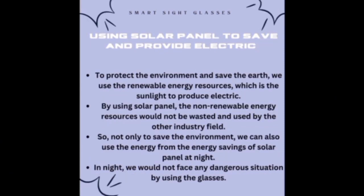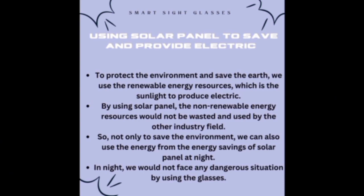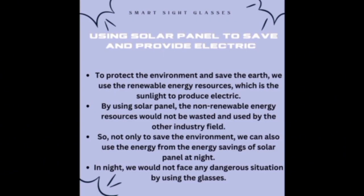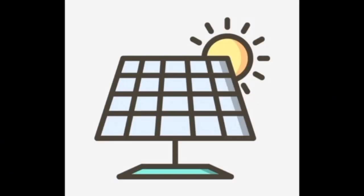Next, using a solar panel to save and provide electricity. To protect the environment and save the earth, we use renewable energy resources — specifically sunlight — to produce electricity. By using solar panels, non-renewable energy resources will not be wasted. Not only do we save the environment, we can also use the energy saved by the solar panel at night.